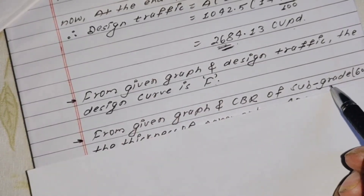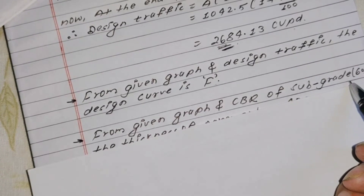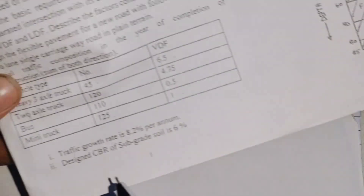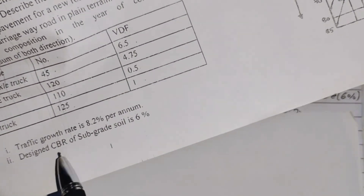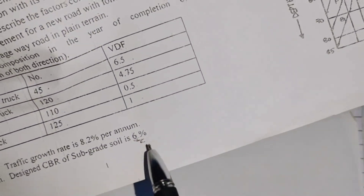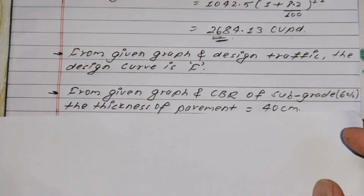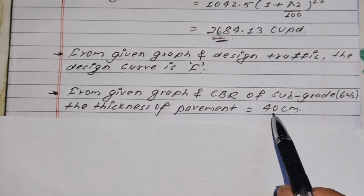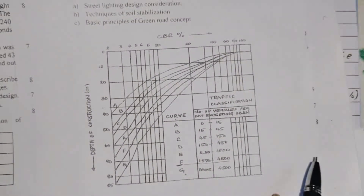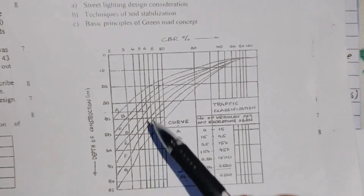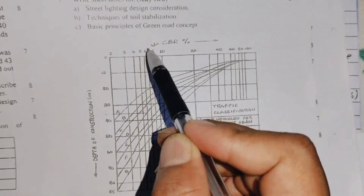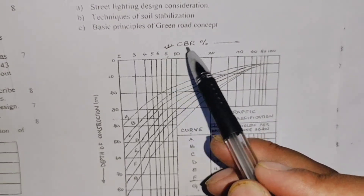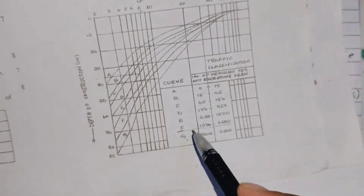The CBR of subgrade is 6%, as given in the question. From the CBR design chart, we locate the 6% CBR curve. For design category F and CBR of 6%, we read the intersection point on the graph to find the thickness of pavement.